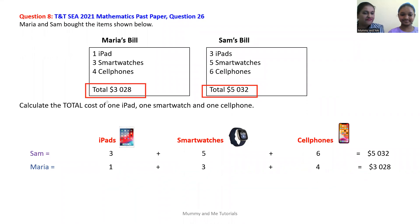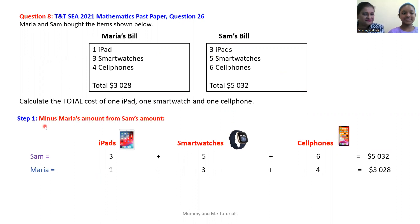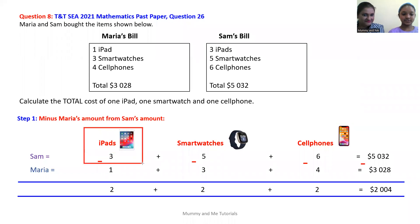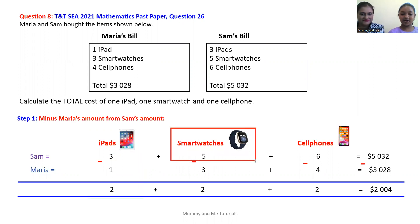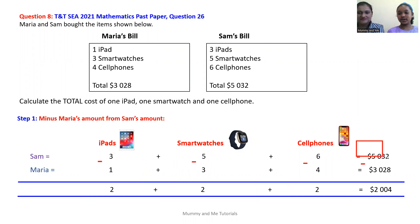The question asks us to calculate for one iPad, one smartwatch, and one cell phone. So we use subtraction. Step one: we're going to subtract Maria's amount from Sam's amount. Sam's three iPads minus Maria's one gives two iPads. Sam's five smartwatches minus Maria's three equals two smartwatches. Sam's six cell phones minus Maria's four equals two cell phones. We also subtract the costs: $5,032 minus $3,028 gives $2,004.